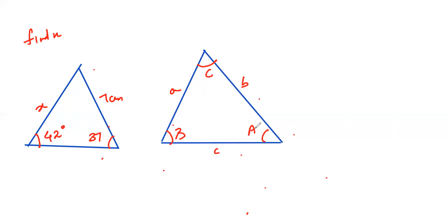Then write on the same formula. A by sine capital A is equal to B by sine capital B is equal to small c by sine capital C respectively. Now here we have to use what? Here it is A and B. 42 and 37 is given. So we have to only use which one in this. I'll draw a box here.